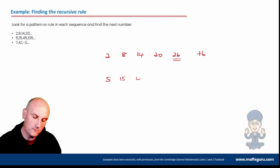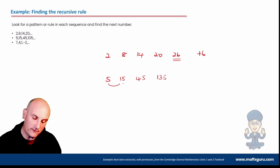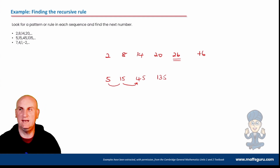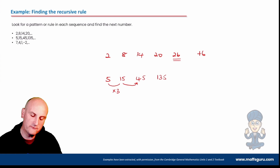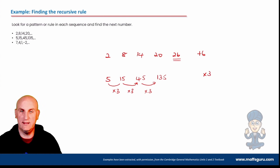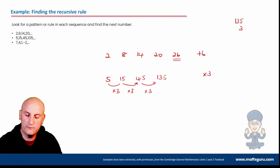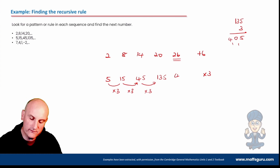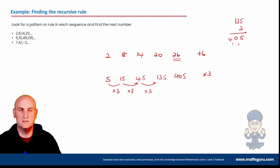What about 5, 15, 45, 135? It's not an adding rule — things are getting bigger but not by a fixed amount. So the next rule I try is a times rule. How do I go from 5 to 15? Times by 3. 15 times 3 is 45. 45 times 3 is 135. So my rule is times by 3, and the next number is 135 times 3, which is 405.